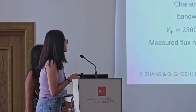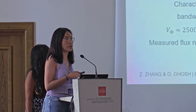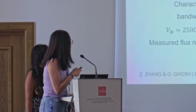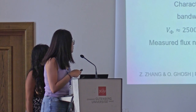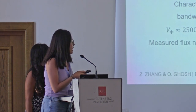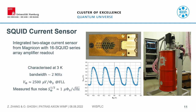This is our SQUID current sensor — SQUID is short for Superconducting Quantum Interference Device. It is an integrated two-stage current sensor developed by Magnicon and PTB Berlin. We characterized it in our lab with the refrigerator at 3 Kelvin. It has a bandwidth of about 2 MHz and a flux transfer coefficient of about 200 to 2,500 microvolts per flux quantum at flux lock loop, meaning for every flux quantum the SQUID receives it outputs 2,500 microvolts. The measured flux noise is about 1 micro-flux-quantum per square root hertz, which is close to the state-of-the-art noise level.